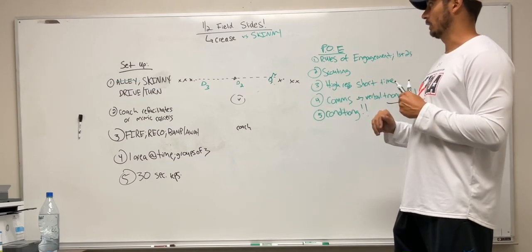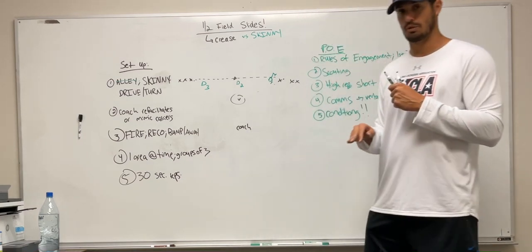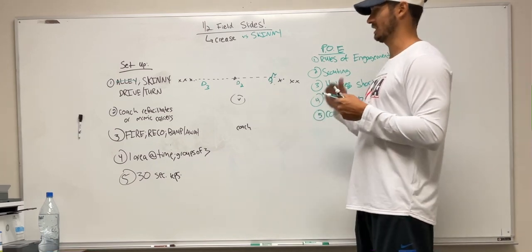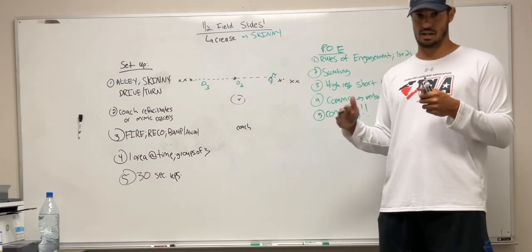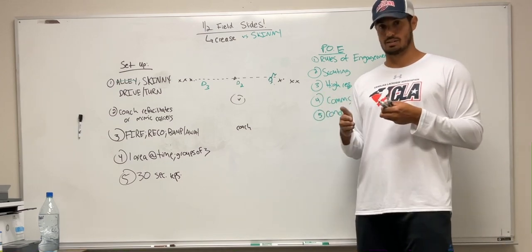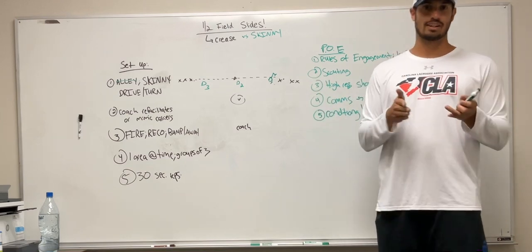So very quickly just want to reiterate, we're looking for groups of three getting 30 to 45 second reps at a time. So in this situation, we want to slide and fire to every single dodge. Just like in the last video, a lot of these dodges are not going to need a slide. Coach your guys on, hey, for the sake of the drill, just fire to everything.